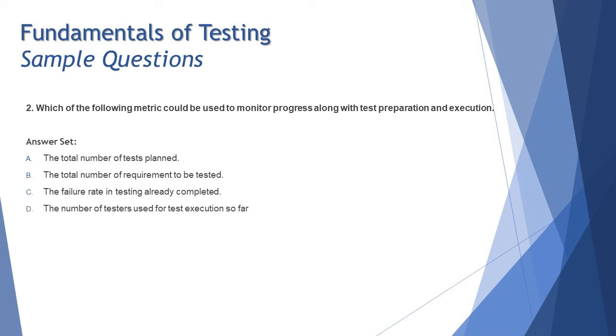So you do not have it in foundation. So please don't refer to such questions. But still let me answer that as I have taken this into consideration. Option A: the total number of test plan. Option B: the total number of requirement to be tested. Option C: the failure rate in testing already completed. Option D: the number of testers used for test execution so far. All these are helpful matrices one or the other way.